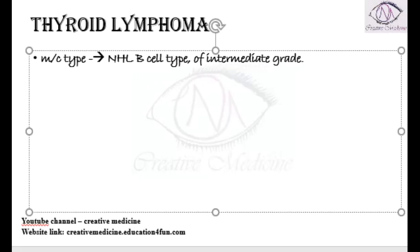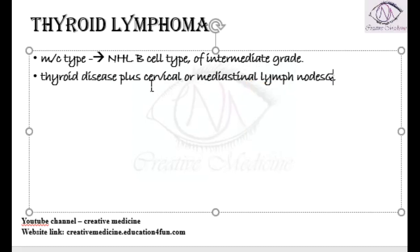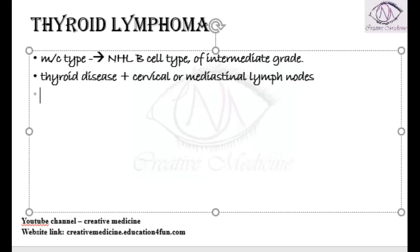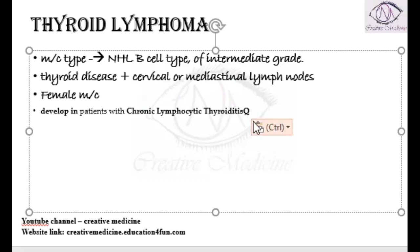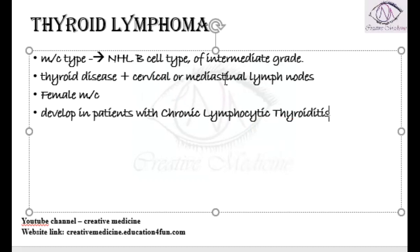In the majority of patients with thyroid lymphoma, thyroid disease is also present because the lymphoma is involving the thyroid tissue. Along with the thyroid disease, these patients also have mediastinal or cervical lymph nodes. This is more commonly seen in females, and thyroid lymphomas mainly develop in patients suffering from chronic lymphocytic thyroiditis, which is also called Hashimoto's thyroiditis.